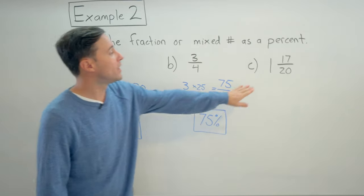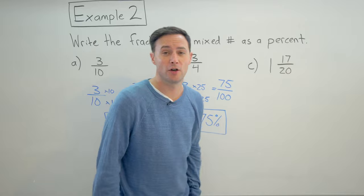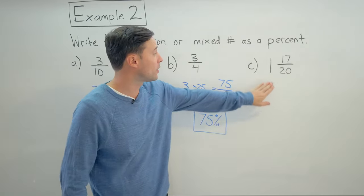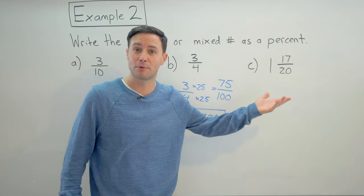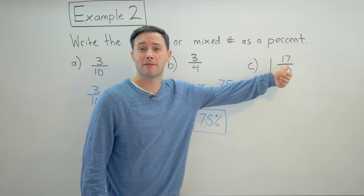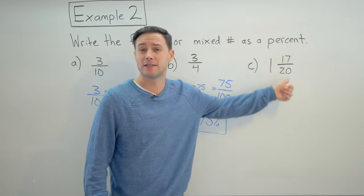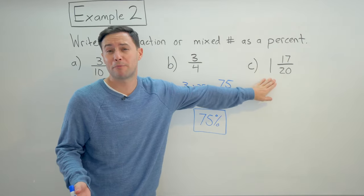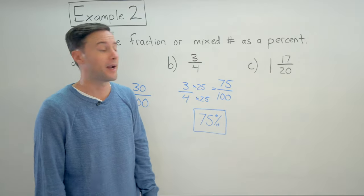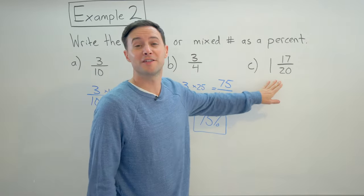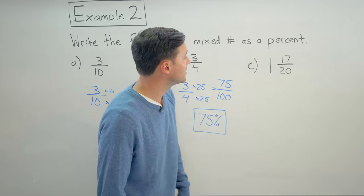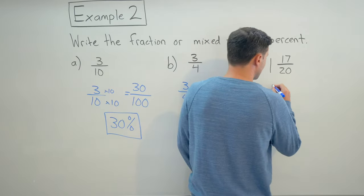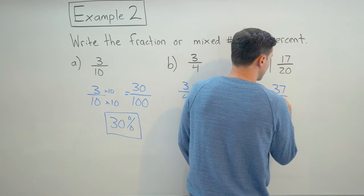All right. Last one. We have a mixed number one in seventeen over twenty. So a couple of different ways we can do this. We can split it up and say, well, that one whole is a hundred percent. Then just find out what percentage seventeen over twenty is and add them together. Or we can change it into an improper fraction first and then find the percent from there. And that's what I'm going to do. All right. Let's first change this into an improper fraction. So twenty times one is twenty plus seventeen is thirty seven. The denominator stays the same.